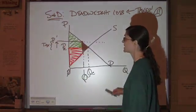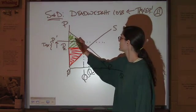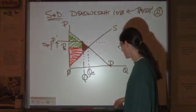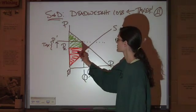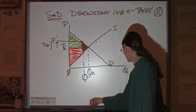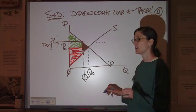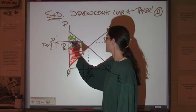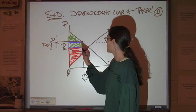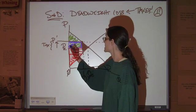Now, we still have our consumer surplus up here. We still have our producer surplus down here. But the government is getting this amount here. This is the piece that the government is taking.